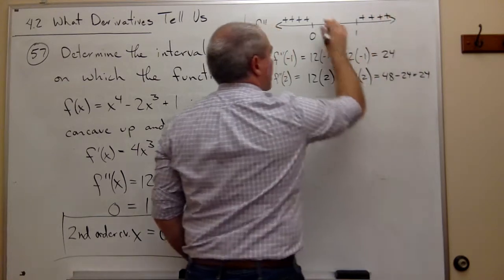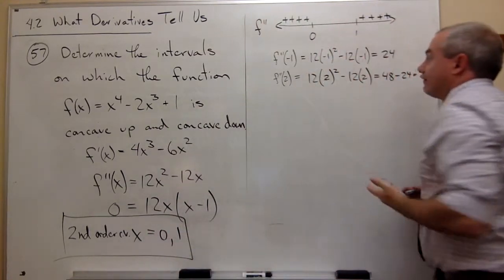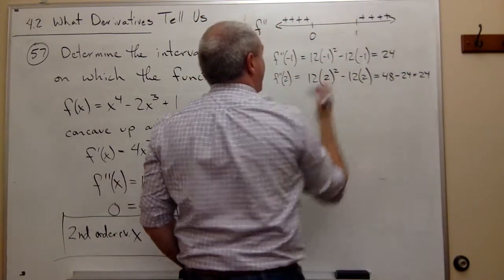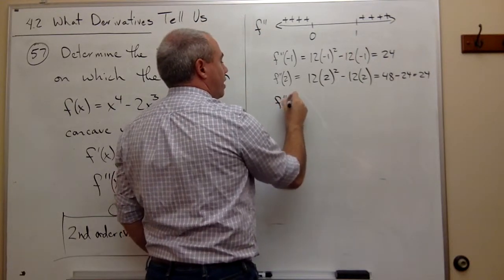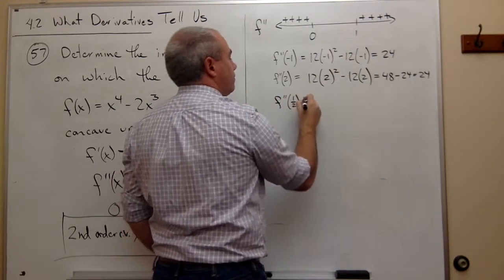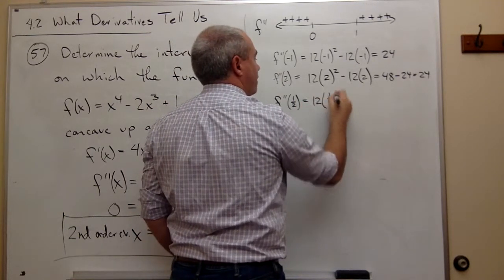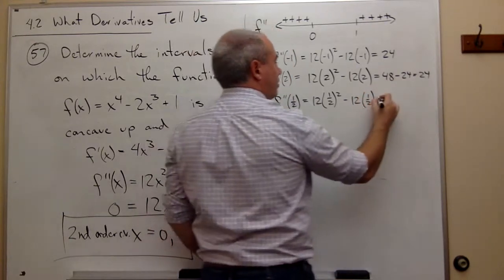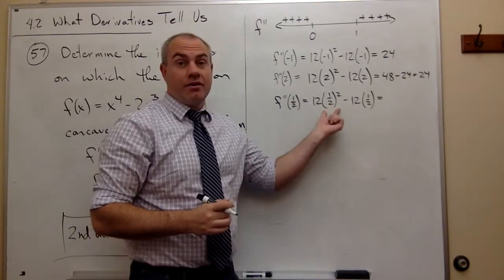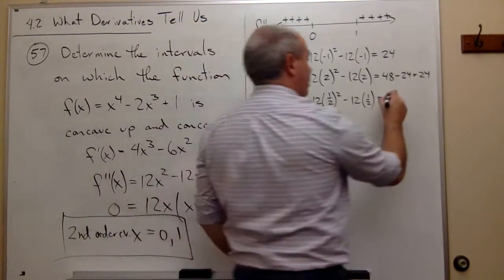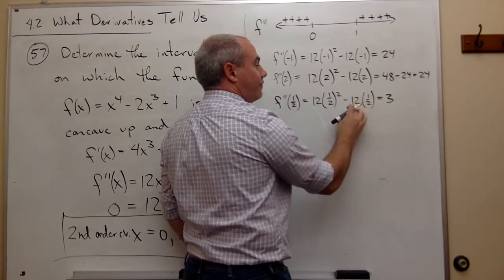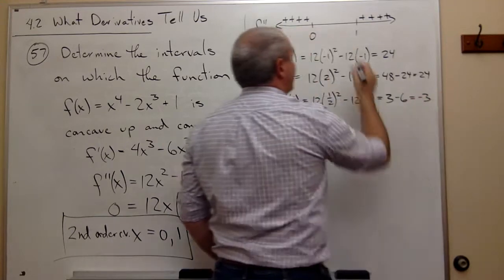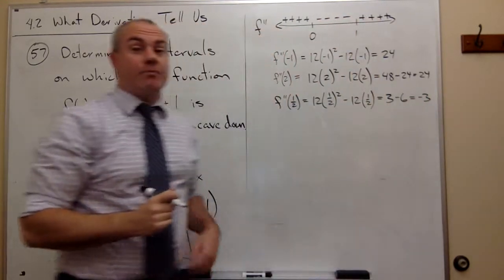So on both outer intervals we get positives. Testing x equals one-half between 0 and 1: f double prime of one-half equals 12 times one-quarter minus 12 times one-half, which is 3 minus 6, which is negative 3. So in between, we get negatives.